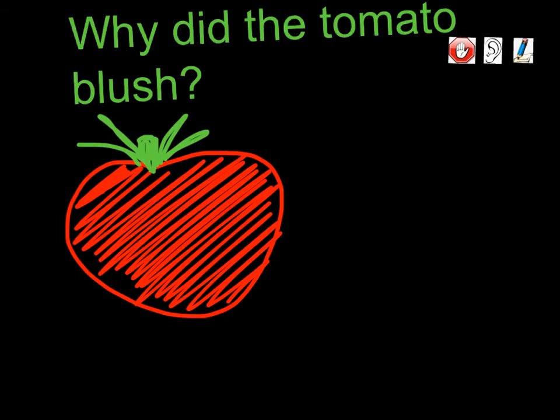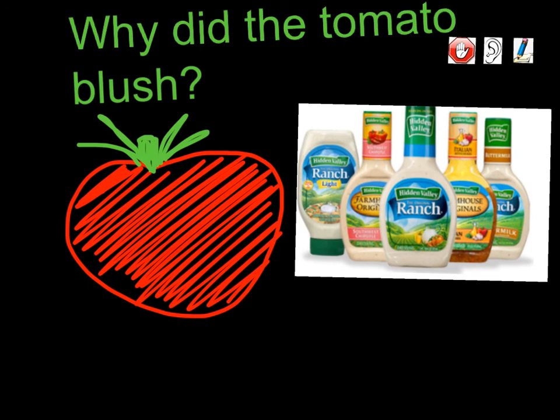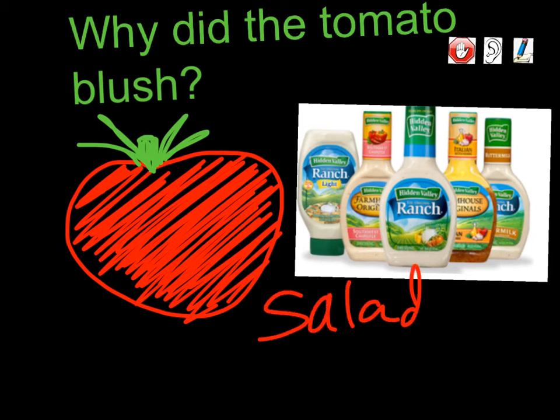Before we move any further with our examples, we're going to take our joke break of the day. Our joke today is: why did the tomato blush? The tomato blushed because he saw the salad dressing. Good thing he's already red, so you can't see that blushing anyway. Go ahead and write down 'salad dressing' in your notes so that I can see that you are watching our video.